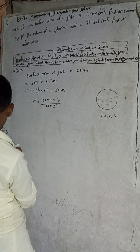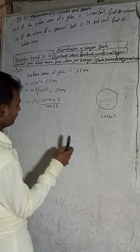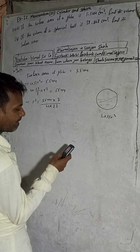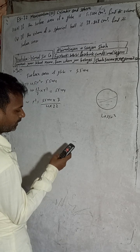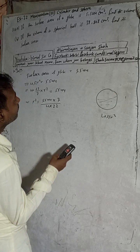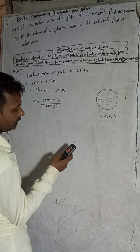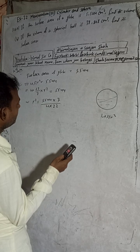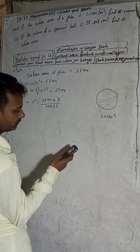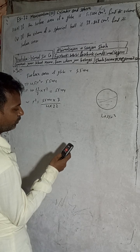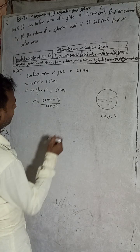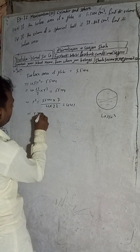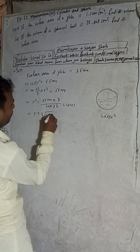So r² = 5,544 × 7 divided by 88. Calculating: 5,544 into 7 divided by 88 gives us 441. So r² = 441.